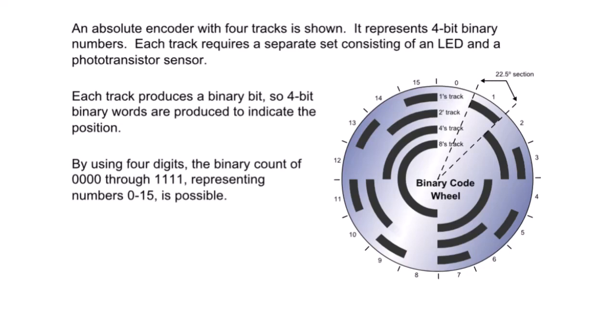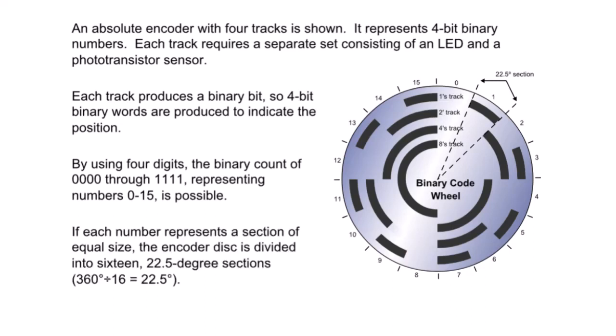By using four digits, the binary count of 0000 through 1111 representing numbers zero through fifteen is possible. If each number represents a section of equal size, the encoder disc is divided into 16 22.5 degree sections.